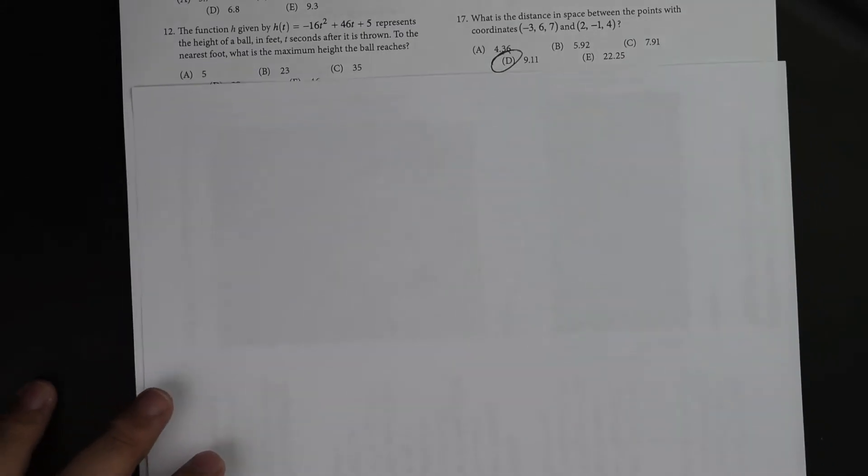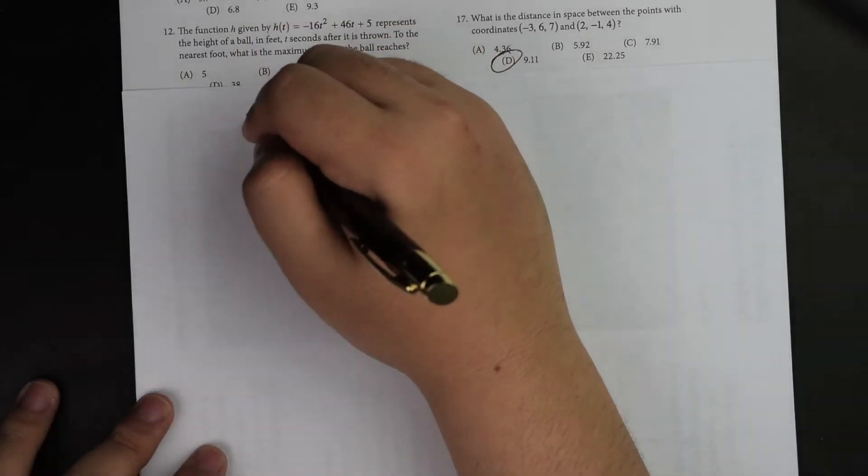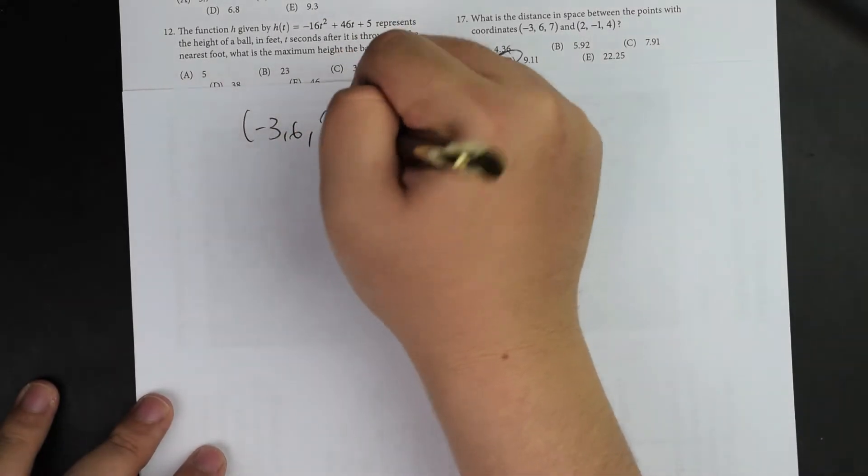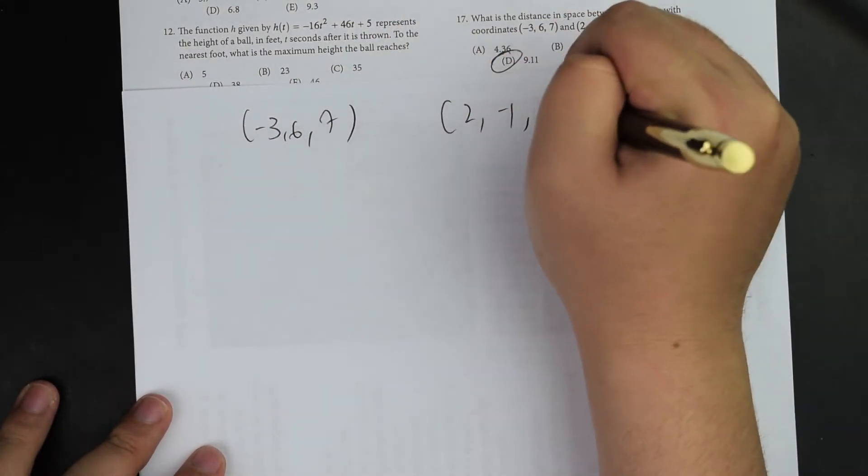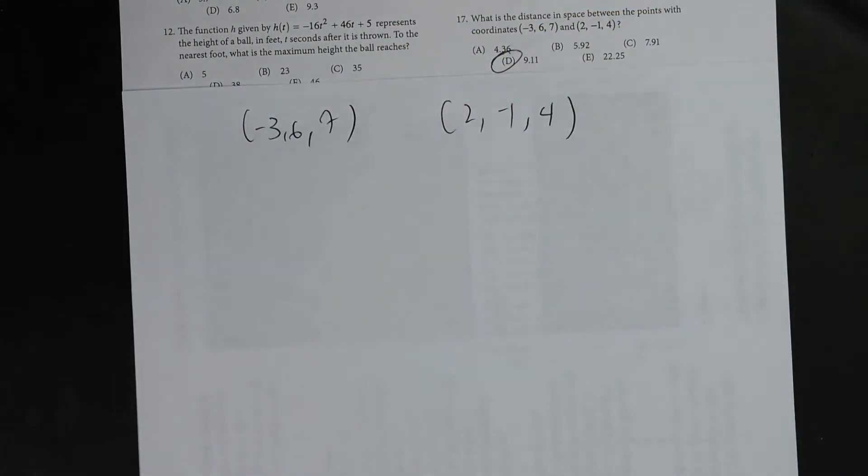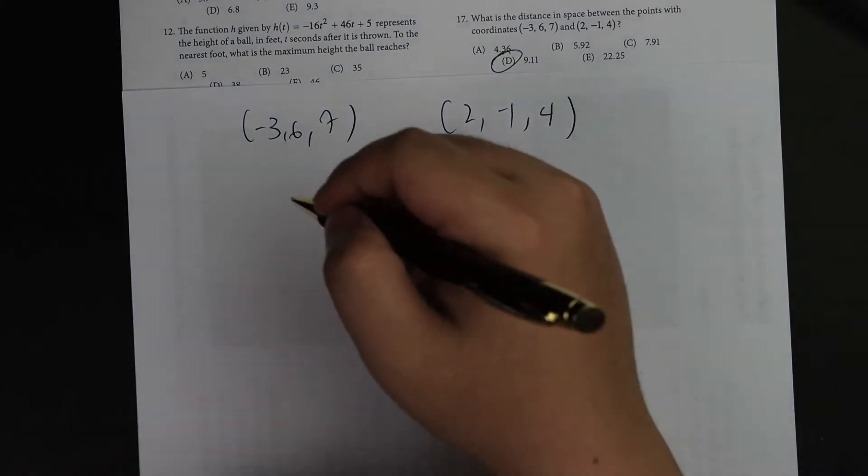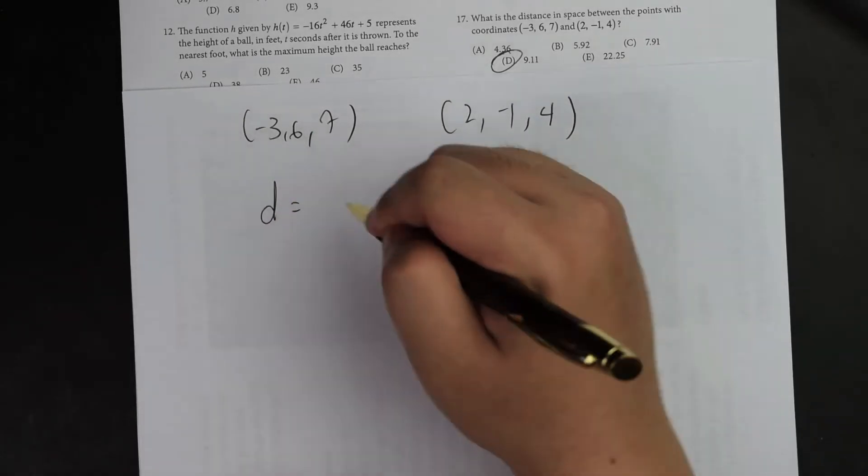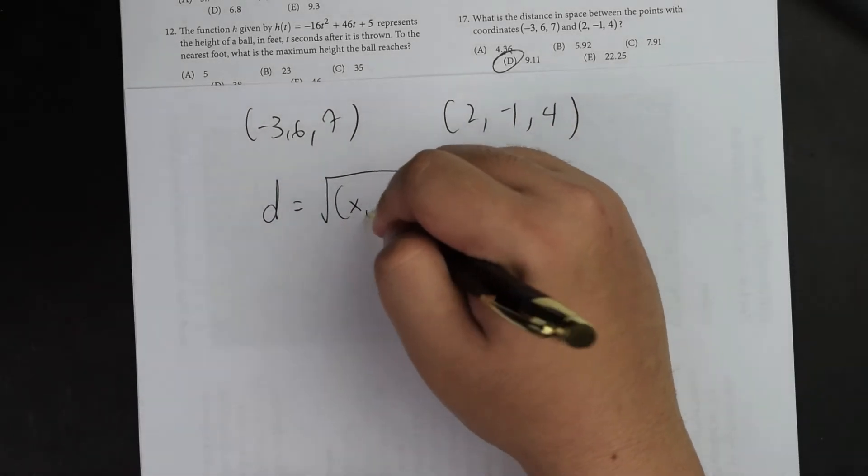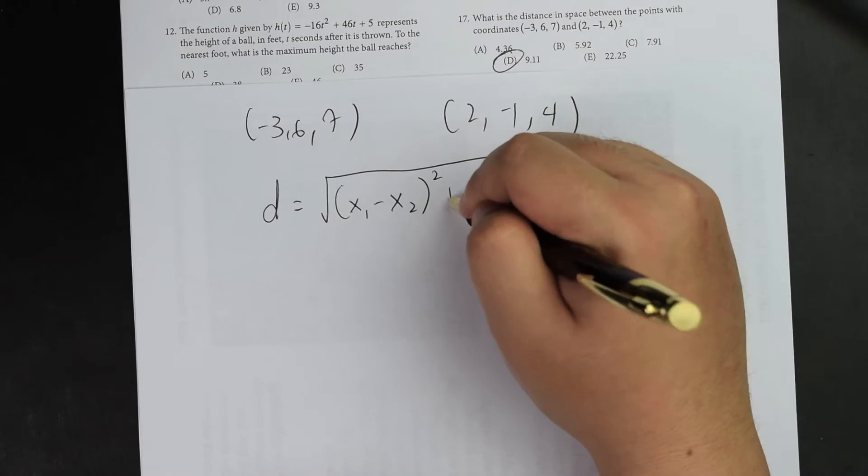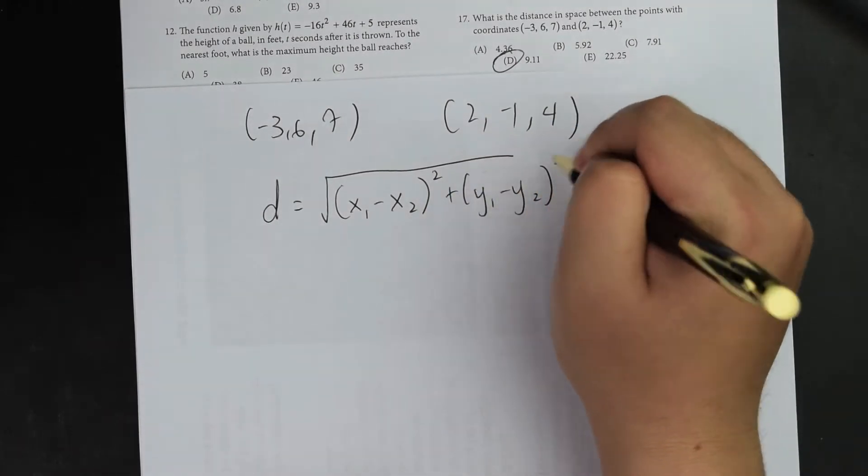And so for this question number 17, when I look at number 17, I see that they talk about the points negative three, six, seven, and two, negative one, four. And so when they are talking about this type of question, there is a constant called the distance formula that exists. And the formula looks like this. The distance equals to square root of x1 minus x2 squared plus y1 minus y2 squared.